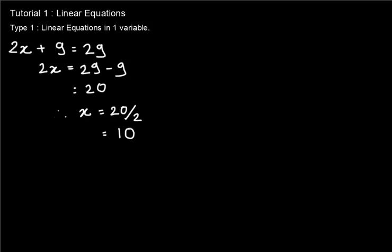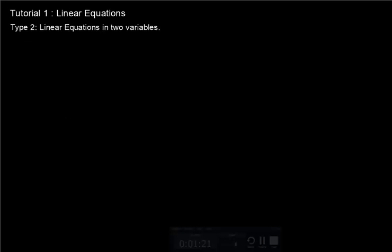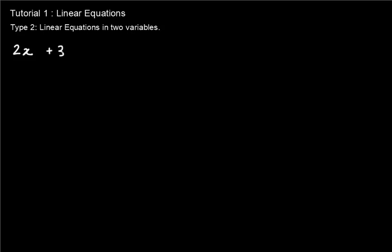So now let's go and see type 2, linear equations in two variables. Here we would have two variables and two equations. So let's have a look at a sample of type 2. Let our equation number one be 2x plus 3y equals 25, and equation number two be 4x plus y equal to 15.